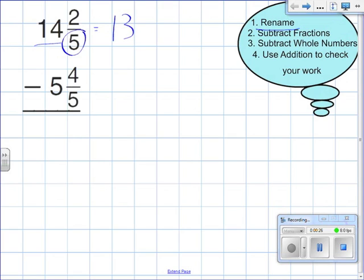So 14 is going to become 13. I use the denominator of my fraction, and I turn that into 5 fifths, which is equivalent to 1. So essentially we still have the same number. We still have 14, but now it's stated differently. I go ahead and add the original fraction, which is 2 fifths.